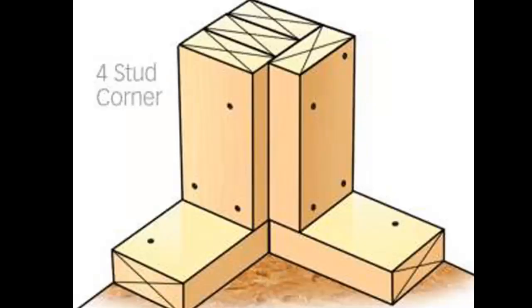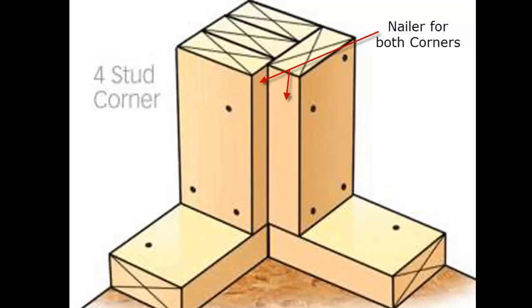With the four-stud corner, you have strength and you'll be able to attach the other wall to it. It'll be really strong in that corner, but it also gives you two nailing corners so you have a nice corner to put the sheetrock to on both walls.